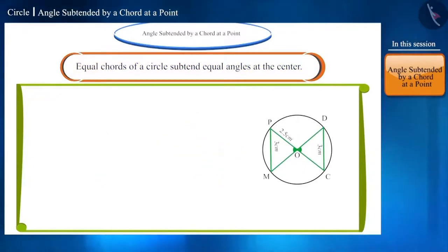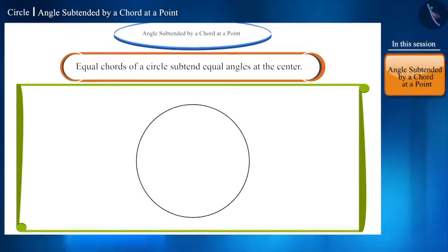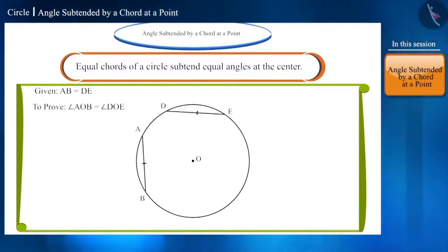Let us prove it mathematically. According to the statement, draw a circle with center O whose two chords AB and DE are equal as given. We have to prove that angles AOB and DOE subtended at the center by these two chords are equal. Join these points like this.